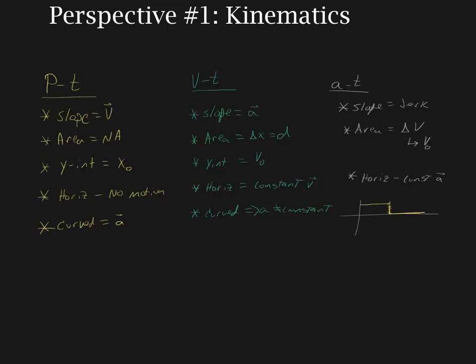One thing I want to discuss is how do we know the y-intercept is meaningful and what it even means. On the position-time graph we say the y-intercept equals x-initial; on the velocity-time graph the y-intercept equals v-initial. But where does that really come from? How do we know for sure? Physics is big on proving things — we're going to do a lot of proofs, and the purpose is to show we're not making it up; it's not something mystical you can't understand.